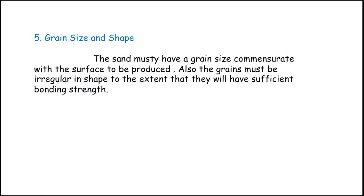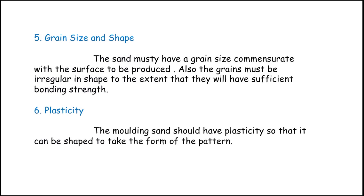Grain size and shape: the sand must have a grain size commensurate with the surface finish to be produced. Also, the grains must be irregular in shape to the extent that they will have sufficient bonding strength. If the grains are regular in shape, they will loosen at the contact points.